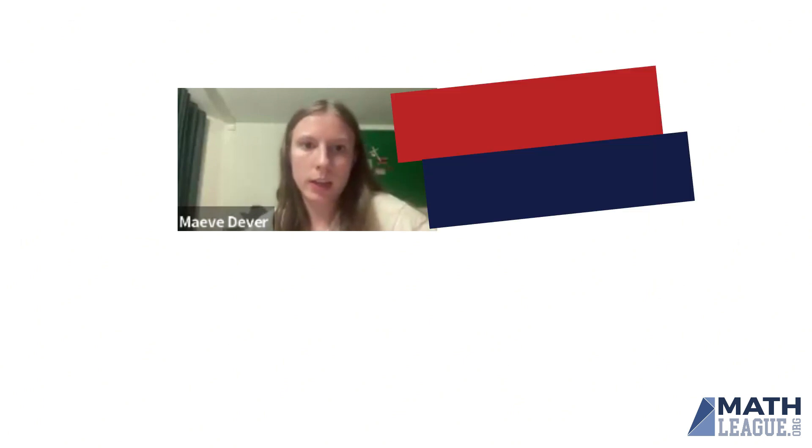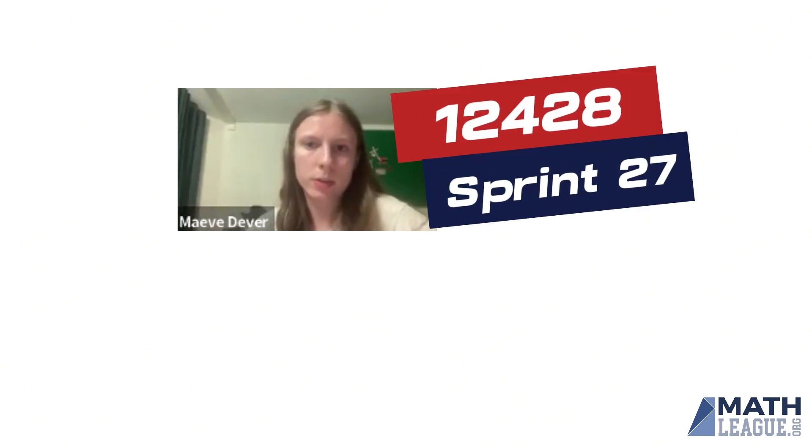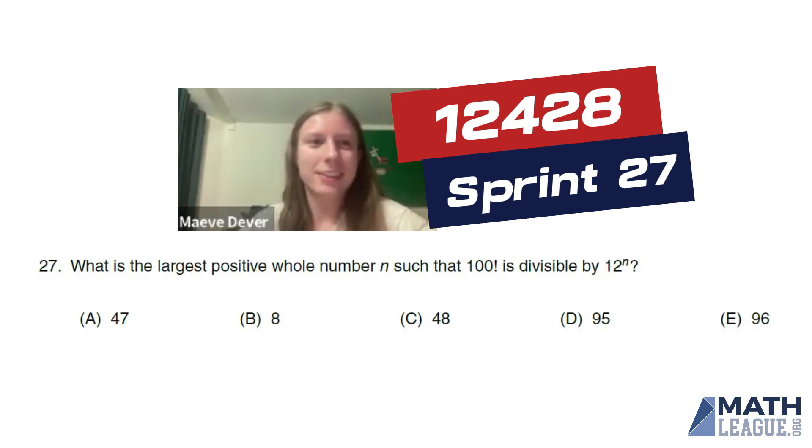All right, we're going to have a look at Sprint 27 because I don't feel number sense problems make fantastic presentations. So, Sprint 27, what is the largest positive whole number n such that 100 factorial is divisible by 12 to the n?